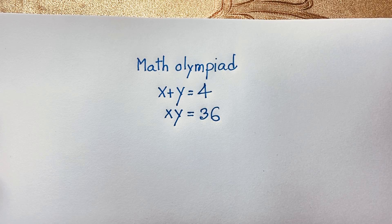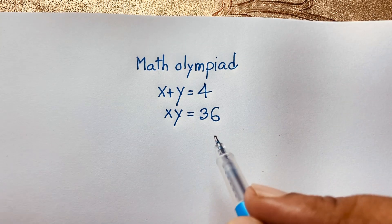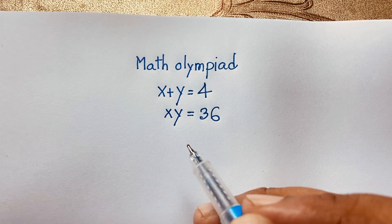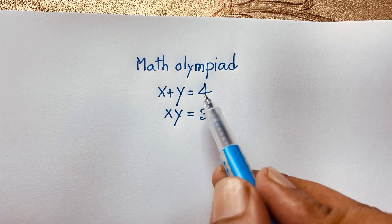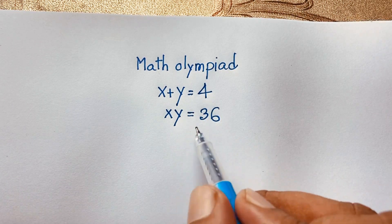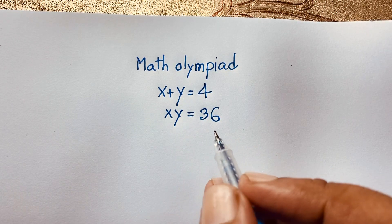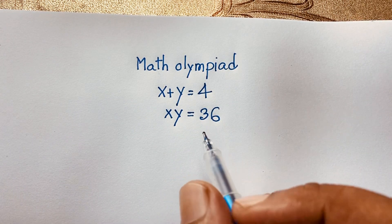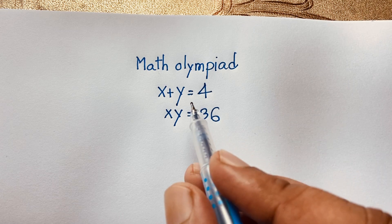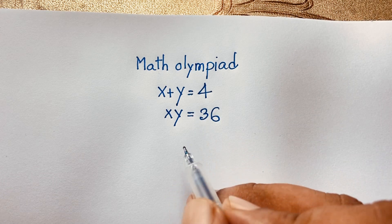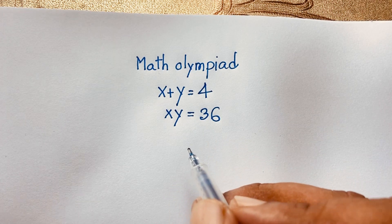Hello everyone, welcome to Russia's Classroom. Today we have solved a nice math problem, which is x plus y is equal to 4, and x times y is equal to 36. We will find out what is the value of x and y in this math problem.